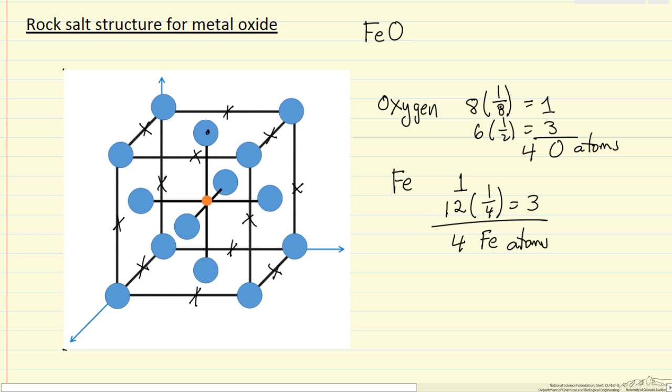So indeed we have the correct stoichiometry, and this is a representation then of the rock salt structure, where these are oxygens and this is iron, as well as each of the X represents iron.